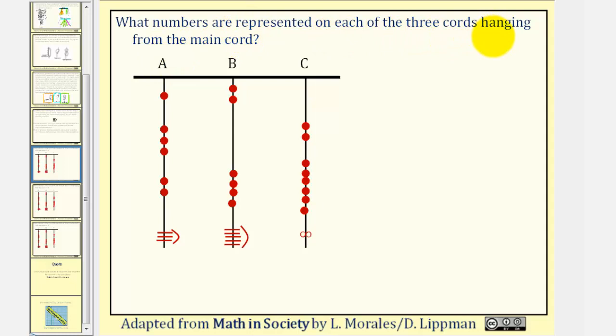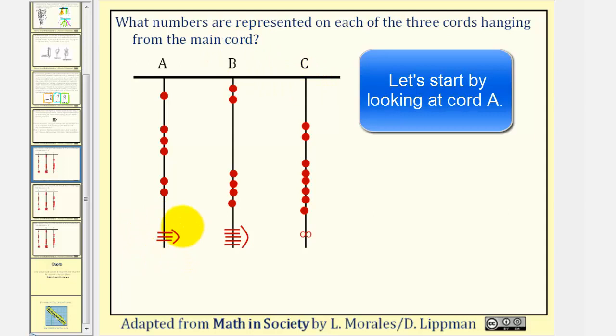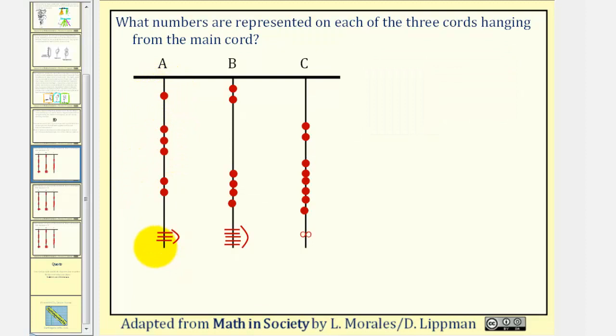Let's take a look at some examples. What numbers are represented on each of the three cords hanging from the main cord? Starting at the bottom, this is the ones place value, this is the tens, this is the hundreds, and this is the thousands. We have a long knot in the ones place value. These three horizontal bars represent a long knot with three turns, so we have a three in the ones place value. We have two knots in the tens place value, that's twenty. Plus, we have three knots in the hundreds place value, that's three hundred. Plus we have one knot in the thousands place value, so we have one thousand. So the total for cord A would be one thousand, three hundred, twenty-three.